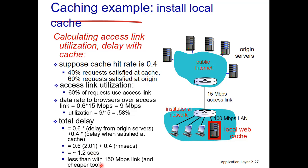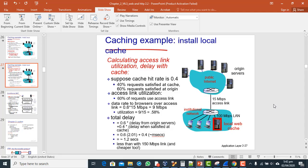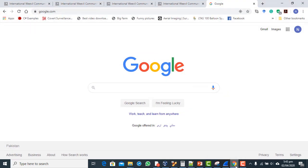We discussed three different levels of cache: the processor cache (L1/L2/L3), the browser cache, and the ISP or institution cache. We have seen a detailed description of how the institutional cache reduces the load on the network.